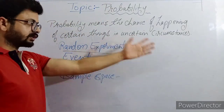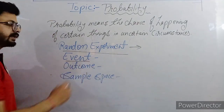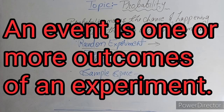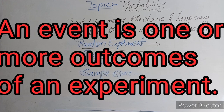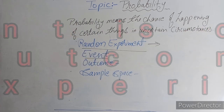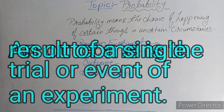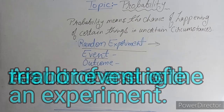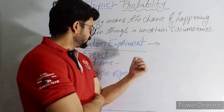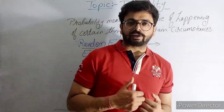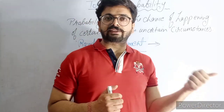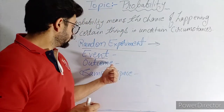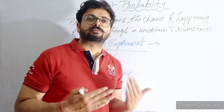That is the definition of random experiment. The next part is event — an event is one or more outcomes of an experiment. Next is outcome — an outcome is the result of a single trial of an experiment. For example, if I throw a dice and a two comes up on the dice, that is the outcome, and that outcome is called an event.